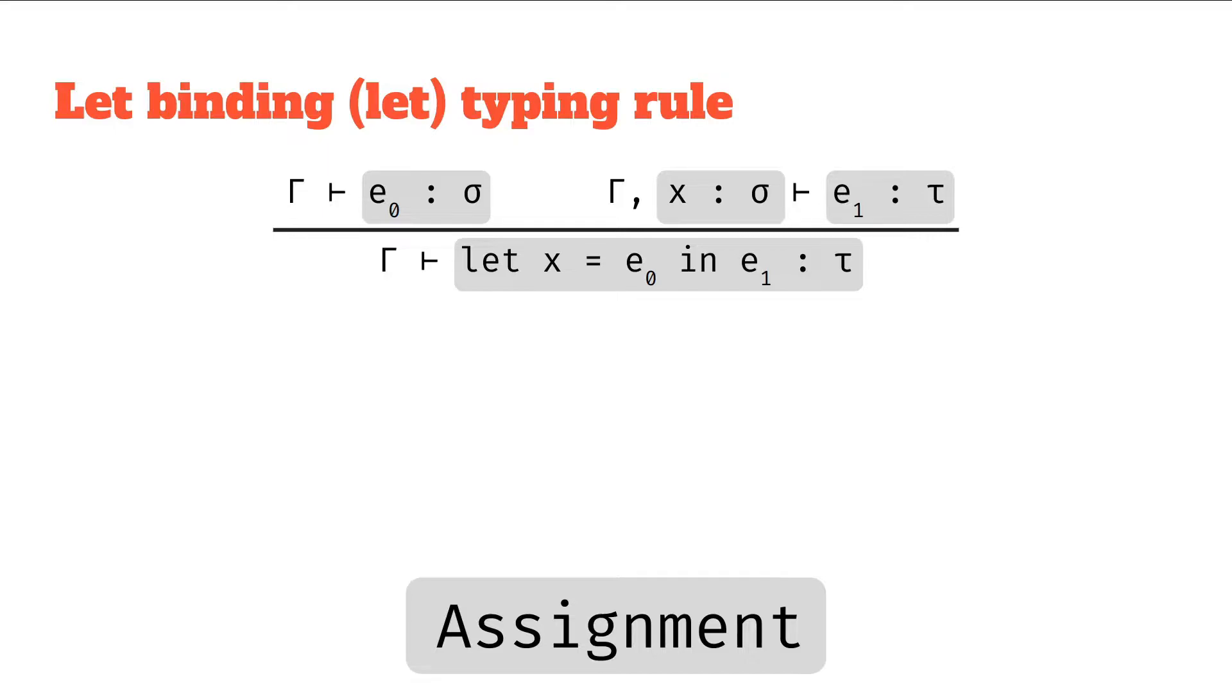It says E0 has type sigma, x has type sigma, E1 has type tau, and then the whole let expression, let x equals E0 in E1, has type tau.